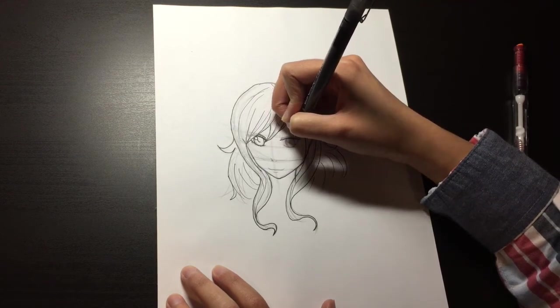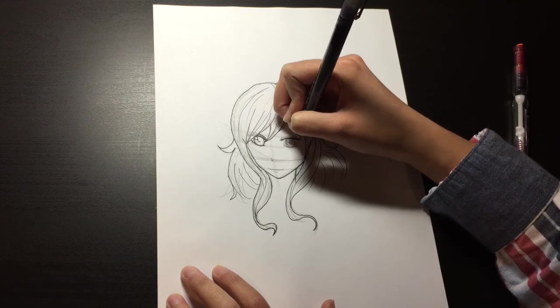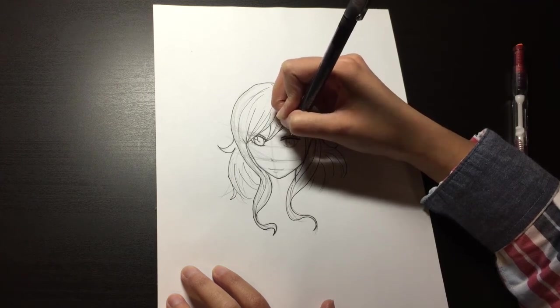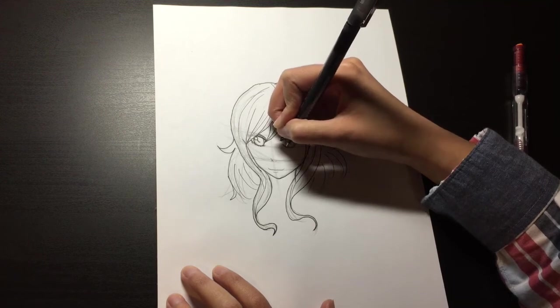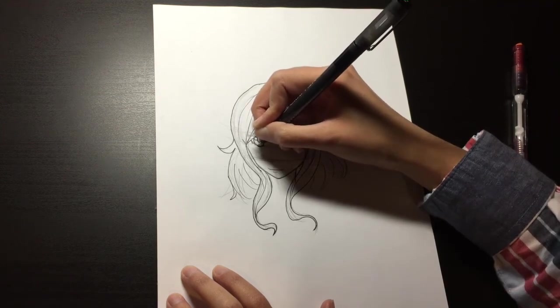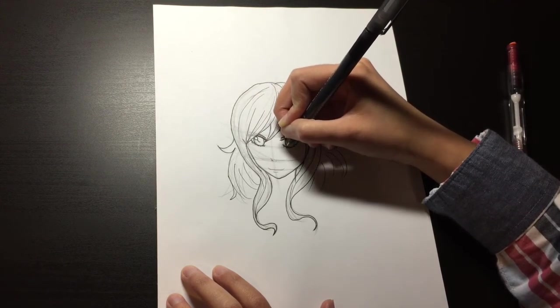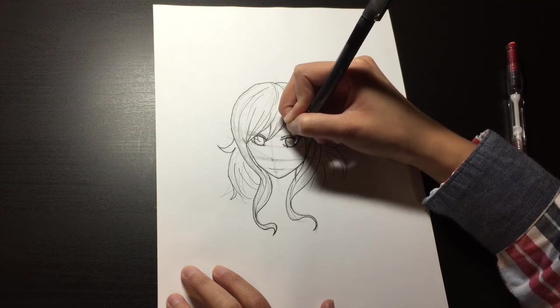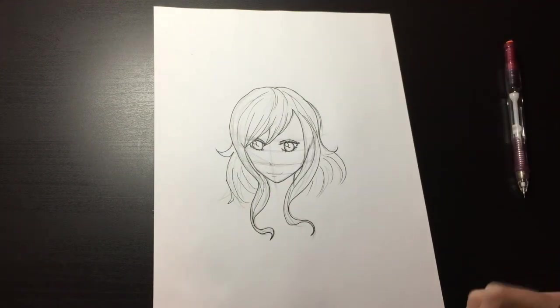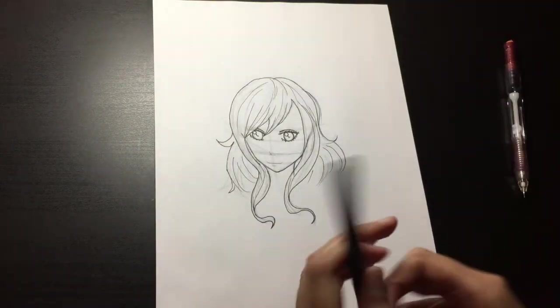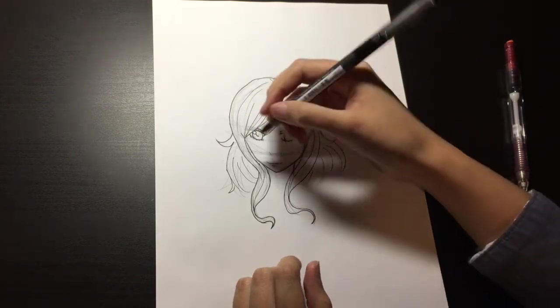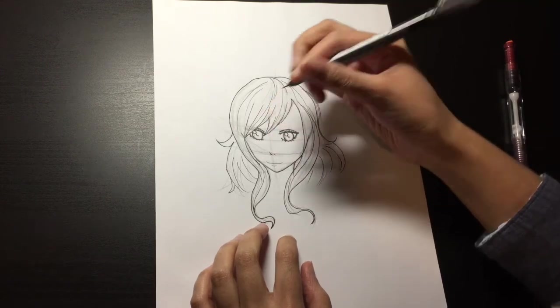So normally I do switch between a 0.3 and a 0.1 when outlining for the face. So the reason I'm not doing that right now for Juvia's eyes is because the outline for her eyes is always a little thicker just to make them pop. But I will switch to a 0.1 for just the nose and mouth.